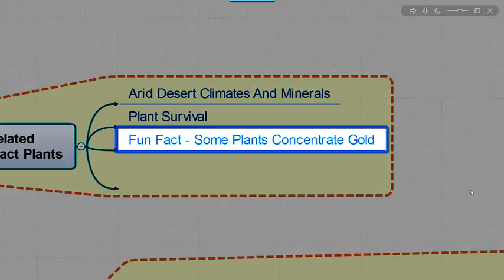Fun fact! Some plants will actually concentrate gold in their leaves. Did you know that? You can use it to find gold under some conditions. It's being studied right now in Australia to see whether or not it can actually be a predictor that they can use to help locate gold locations over a broader area. Pretty cool!